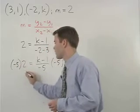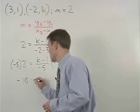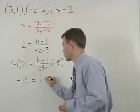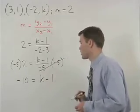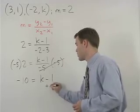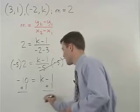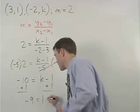To get rid of our fraction we multiply both sides by negative 5. On the left we have negative 10. And on the right our negative 5's cancel and we're left with k minus 1. Add 1 to both sides.